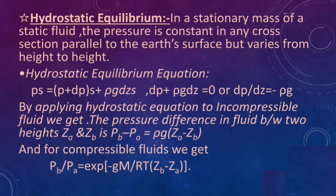Hydrostatic Equilibrium: in a stationary mass of static fluid, the pressure is constant in any cross section parallel to the earth's surface but varies with height. The hydrostatic equilibrium equation is: dp + ρg dz = 0, or dp/dz = −ρg.